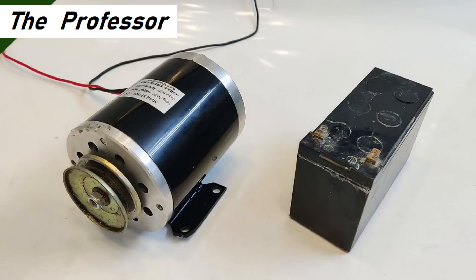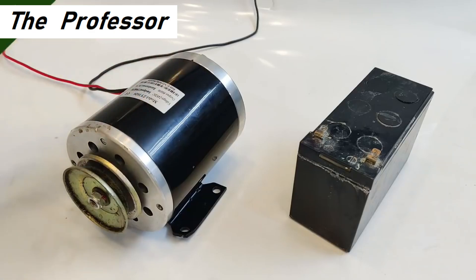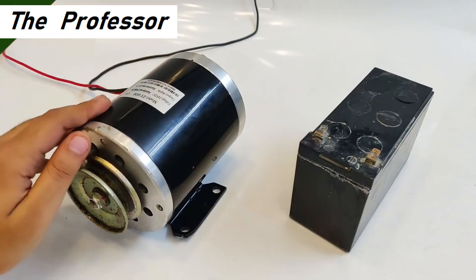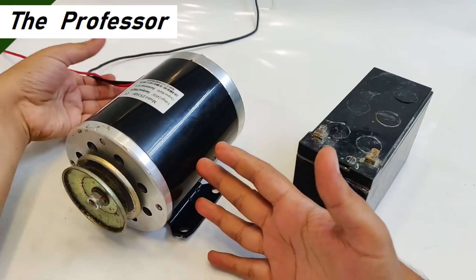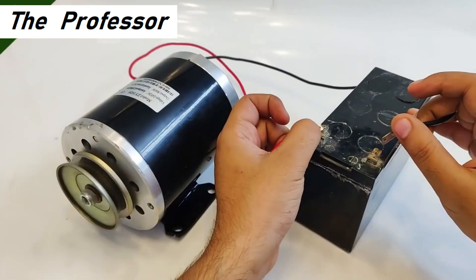This what you see is a 24 volt 500 watt permanent magnet DC motor used for making e-bike. So with this motor I'm going to show you how the DC motors usually perform when connected to a battery.